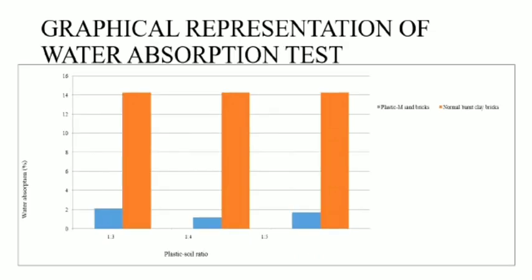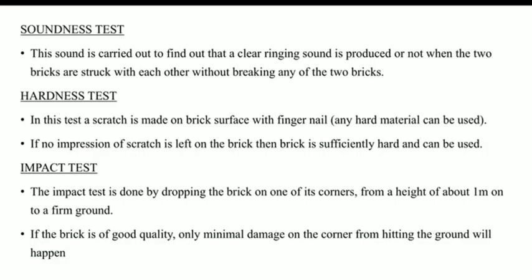Now we do the water absorption test. From the test we got these values and plotted a bar chart. From this bar chart we could see that the plastic brick shows better water absorption than the normal burned clay brick. The plastic M-sand bricks have an almost negligible amount of water absorption compared to the burned clay brick.